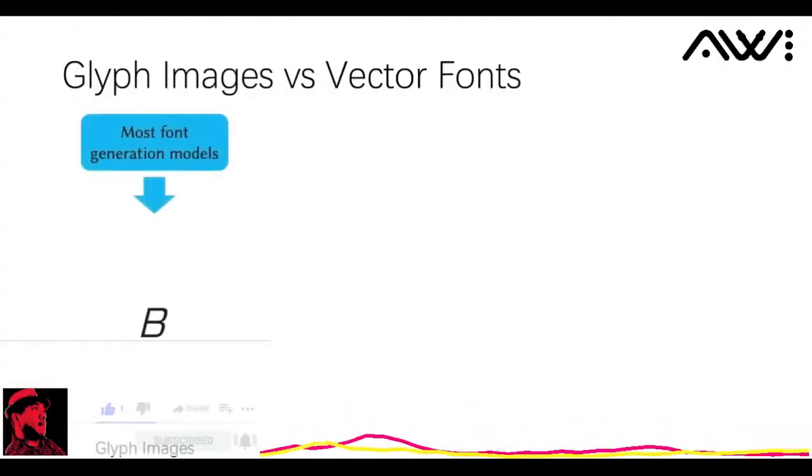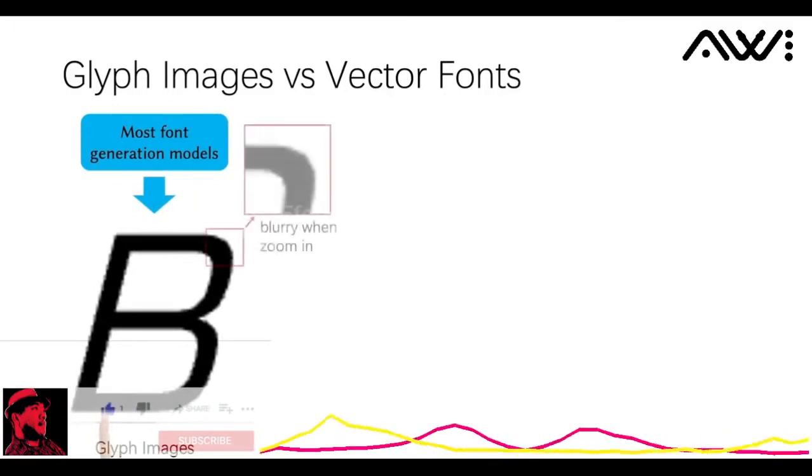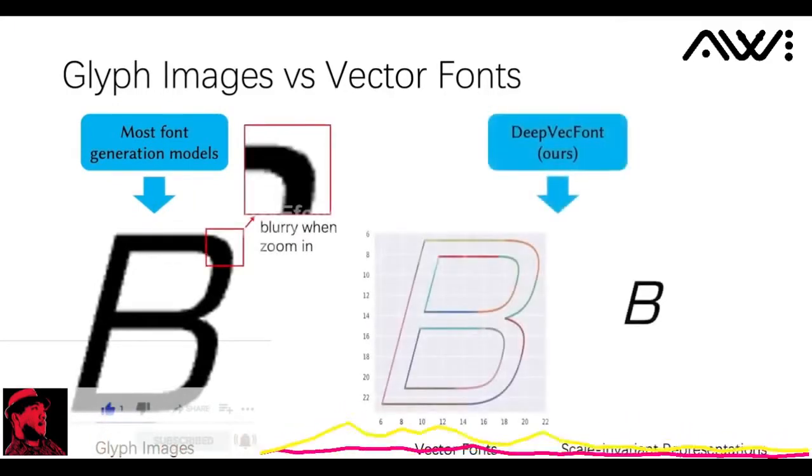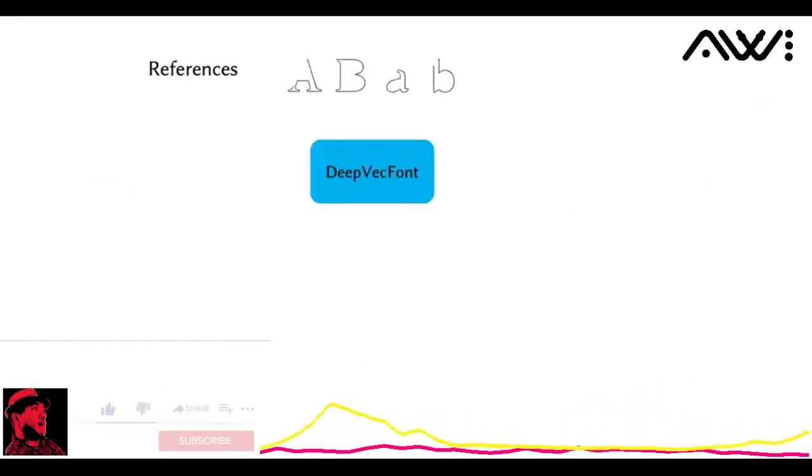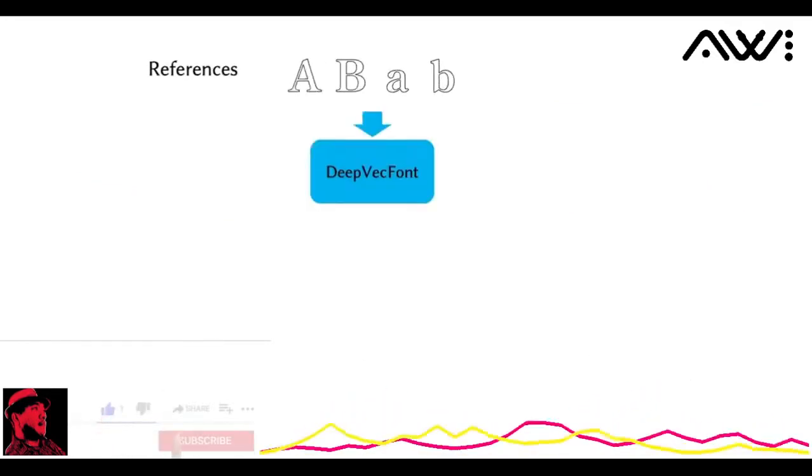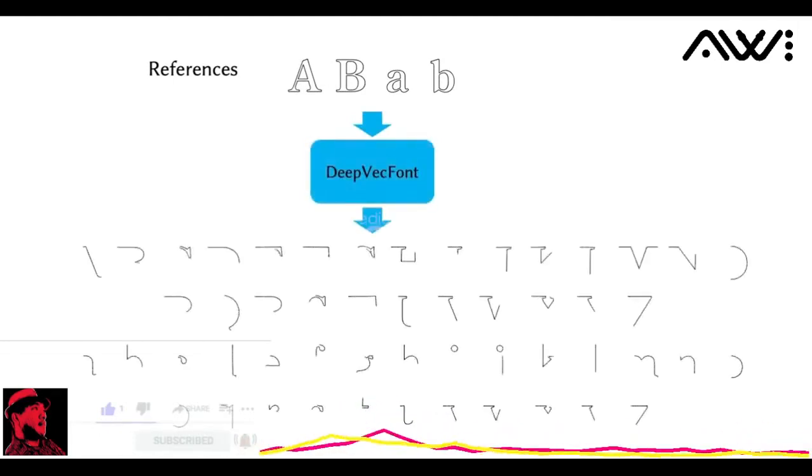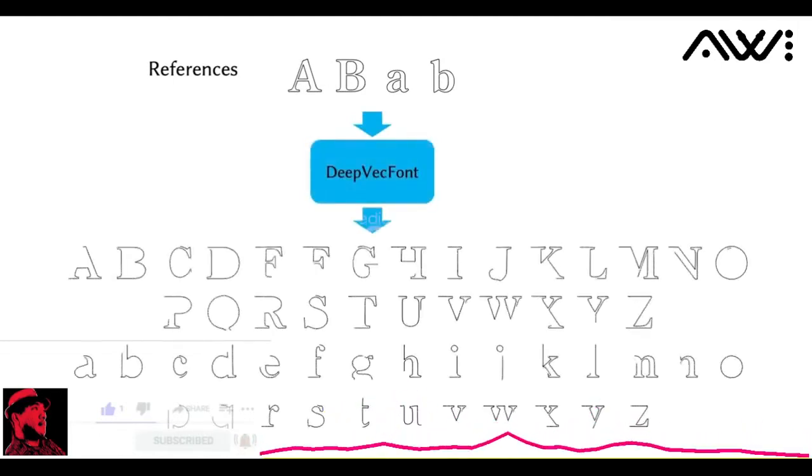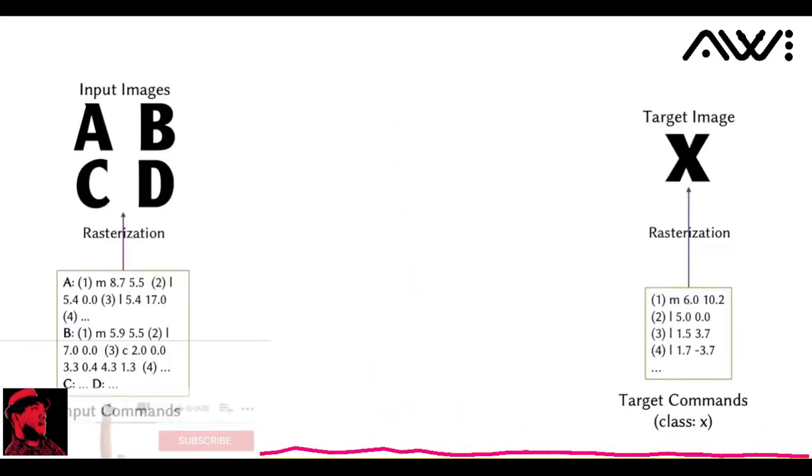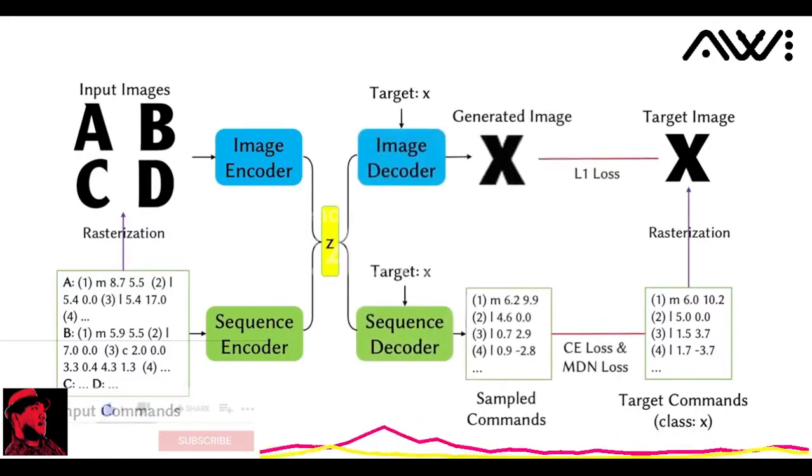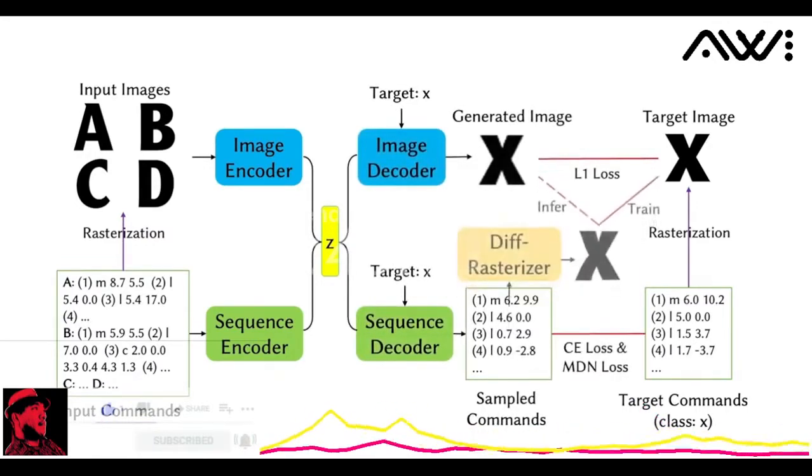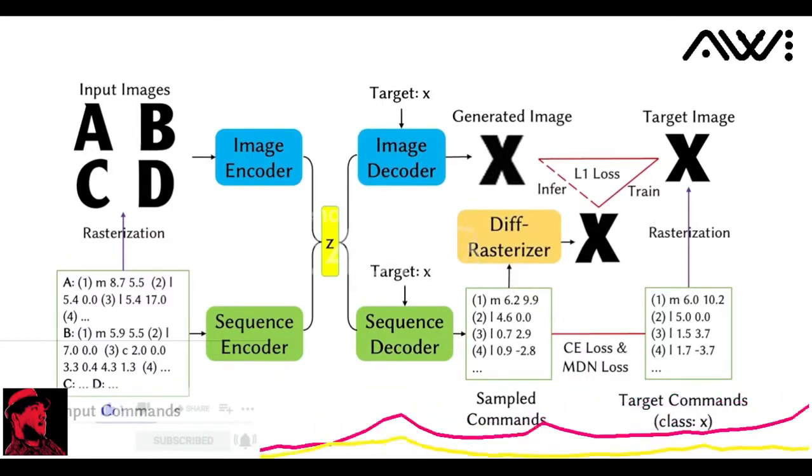Most existing font generation models only aim to generate glyph images. We propose StyleVecFont to directly synthesize vector fonts. Given a few vector glyphs as references, our model can synthesize the whole vector font automatically. Our model is designed to fully exploit the dual modality features, which are first projected into the latent style codes. Afterwards, we synthesize the target images and commands. Respectively, the differentiable rasterizer is employed to align the synthesized vector data with the images.